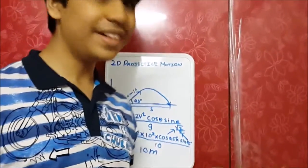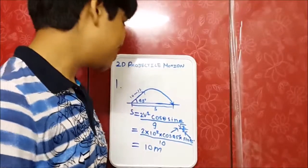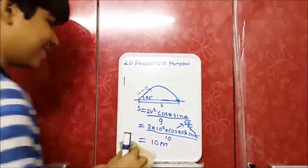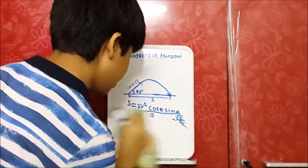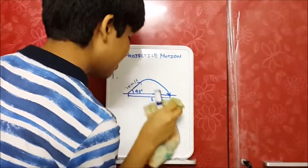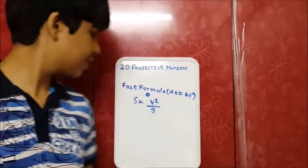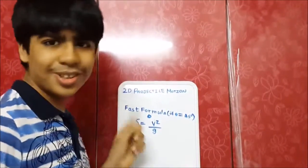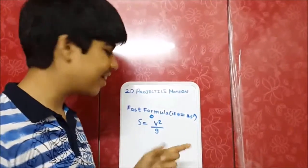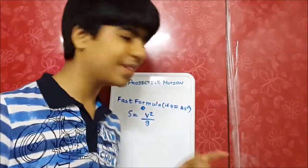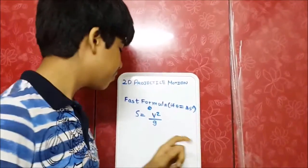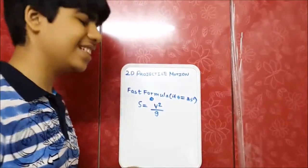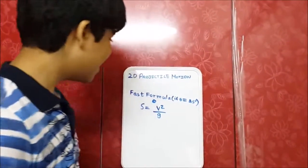So the fast formula is, I'm going to rub this. If you haven't noted it down, if you want to note it down, you can pause the video and copy all this stuff if you want. So you have this fast formula if theta is equal to 45 degrees. You can use that very quickly to solve sums because v squared squaring is easy and dividing is also easy.